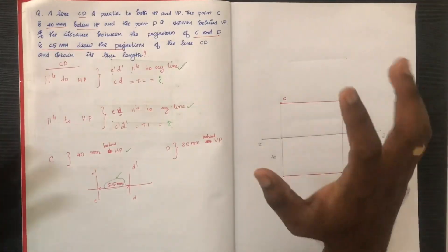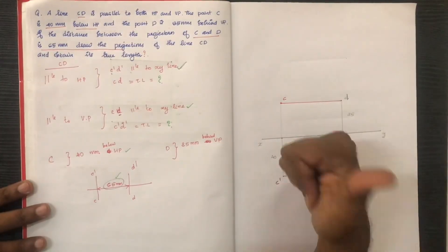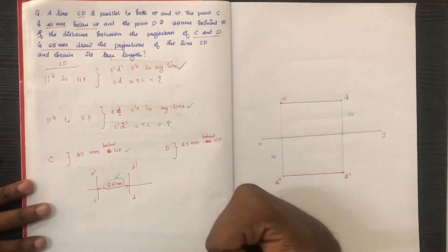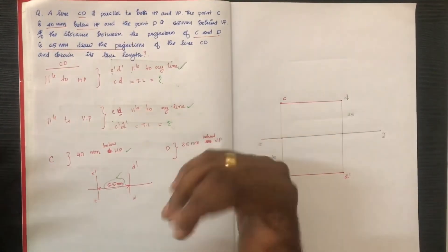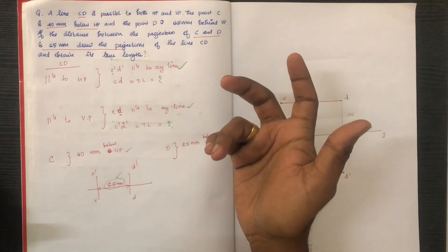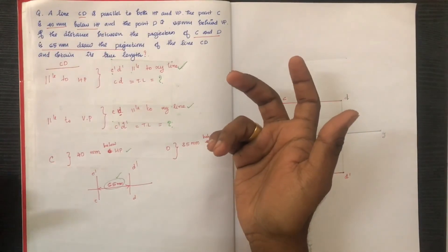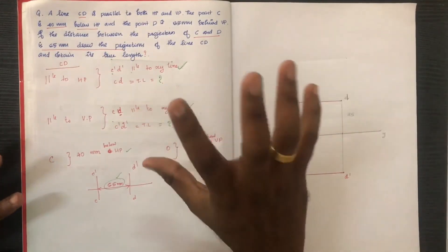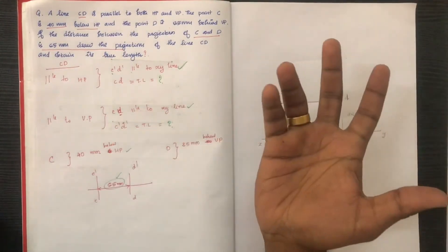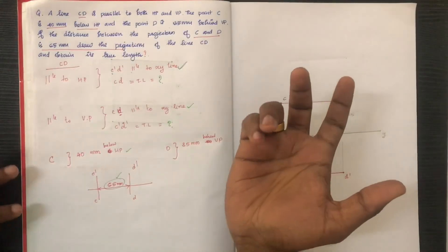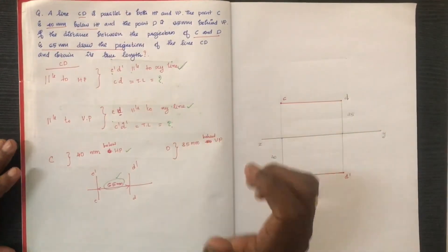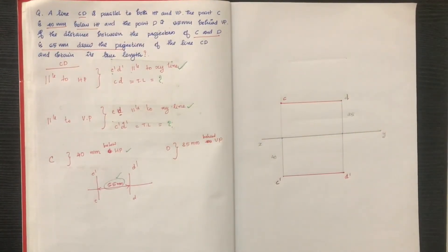In this video we have a line parallel to a particular plane and inclined to another plane. That case will be covered in the next video. Thank you.